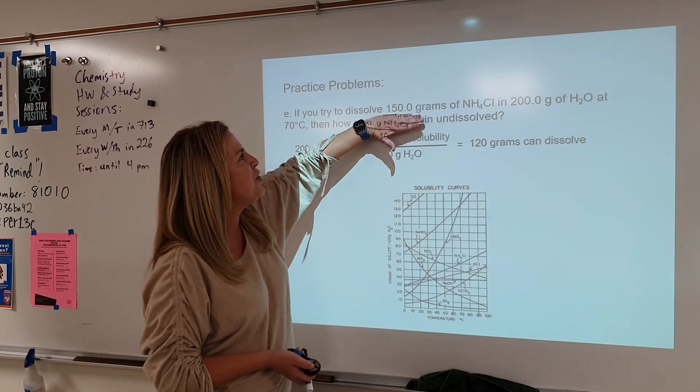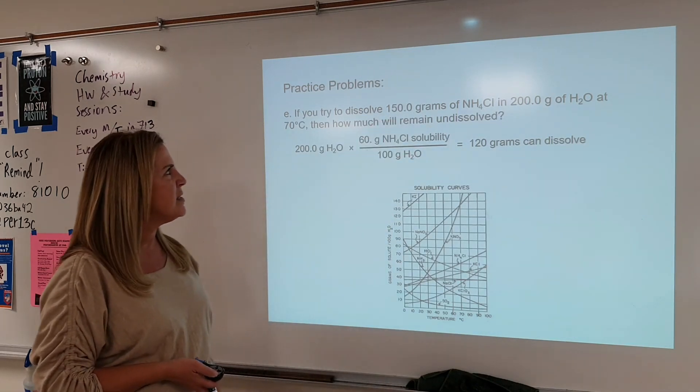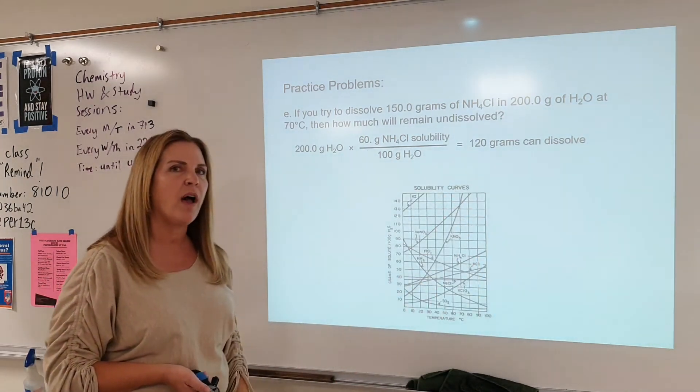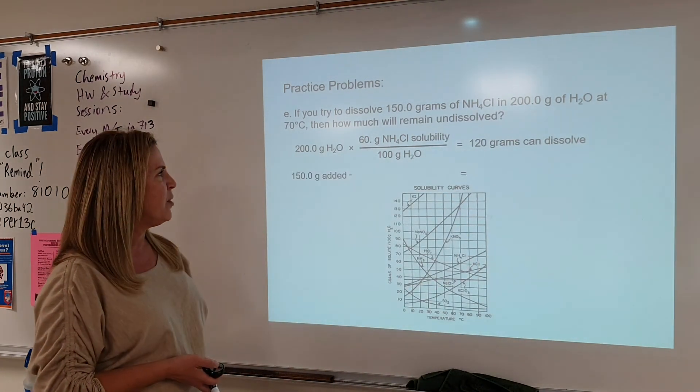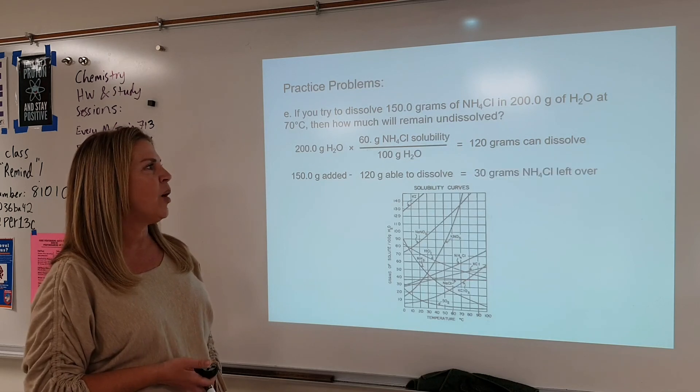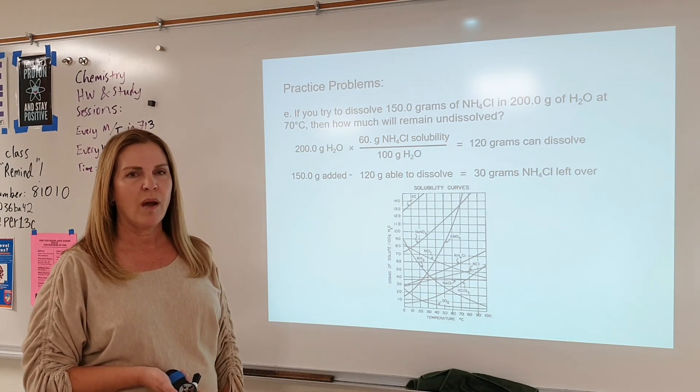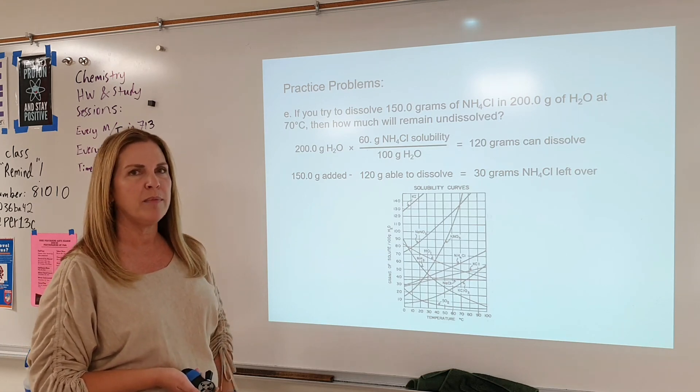Now we want to compare that to how much we actually have, and we can see that if we're given 150 grams and I can dissolve 120, how much is going to be sediment at the bottom? It's going to be about 30 grams of ammonium chloride will be left over. All right. Good luck. Do these practice problems and have a great day.